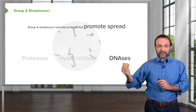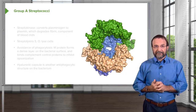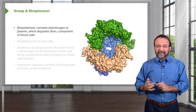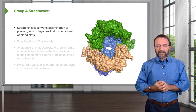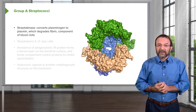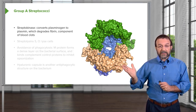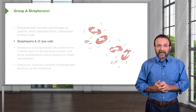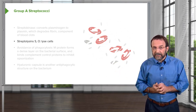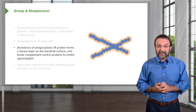These bacteria also produce an enzyme called streptokinase — shown here in its three-dimensional protein structure — which converts plasminogen to plasmin. Plasmin in turn degrades fibrin, a component of blood clots that restricts bacterial movement. Additionally, bacteria produce streptolysins S and O, which lyse cells of various sorts including immune cells that are trying to destroy the bacteria.